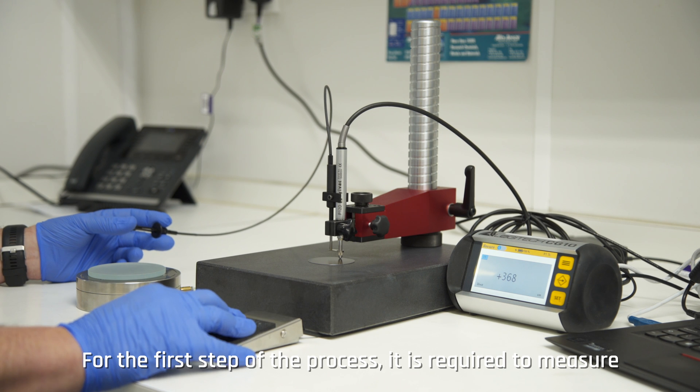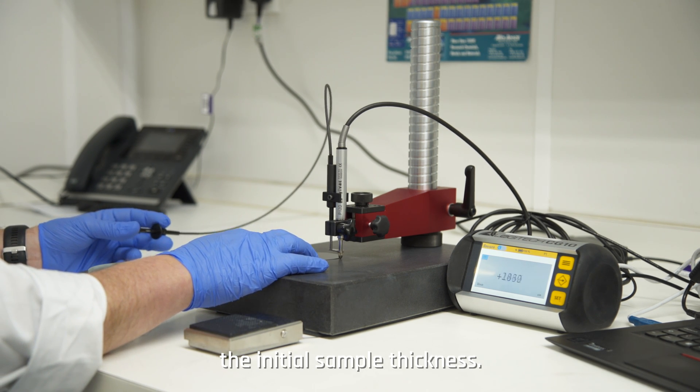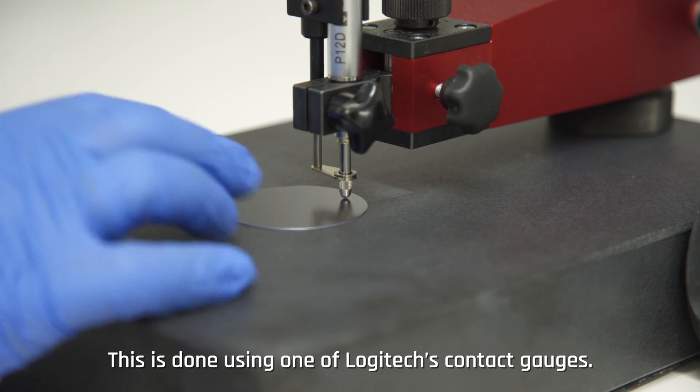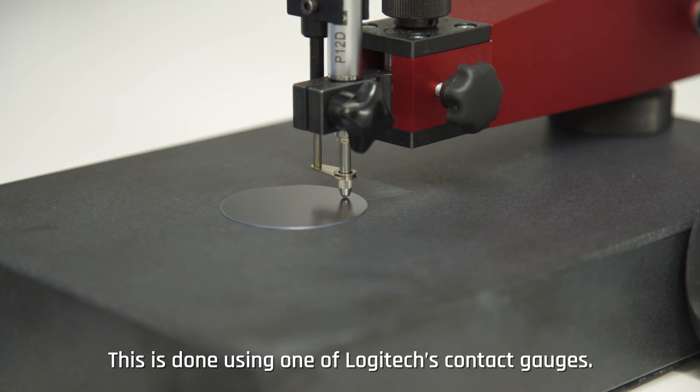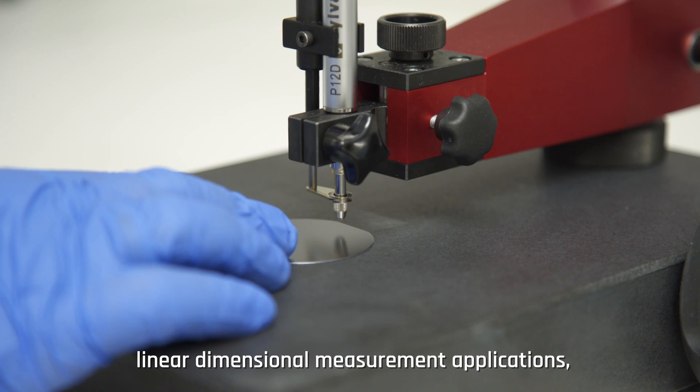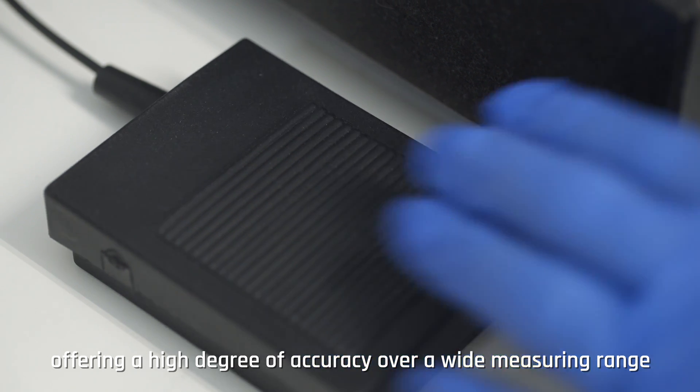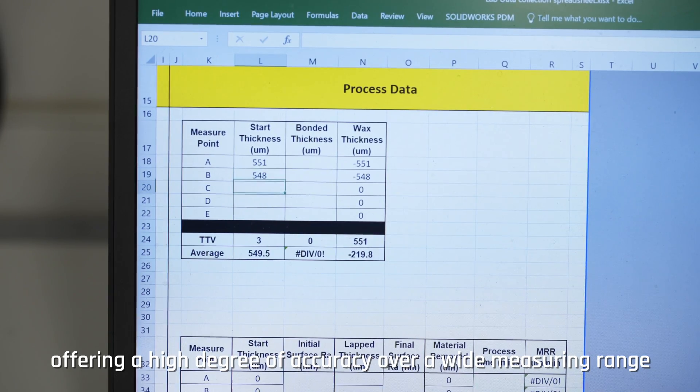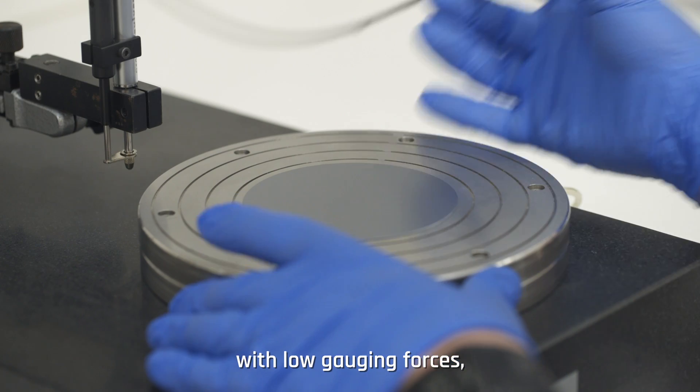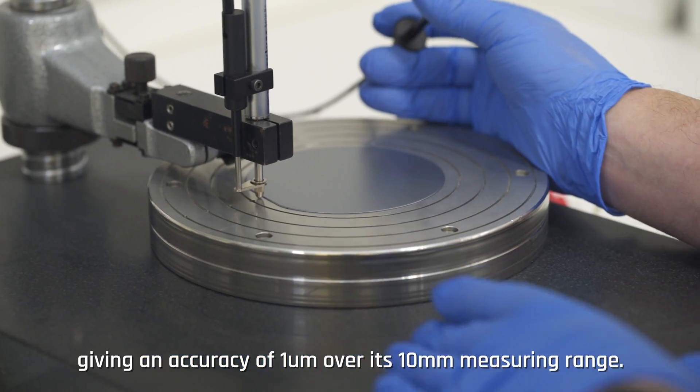For the first step of the process, it is required to measure the initial sample thickness. This is done using one of Logitech's contact gauges. The Logitech CG10 contact gauge is an instrument for linear dimensional measurement applications offering a high degree of accuracy over a wide measuring range with low gauging forces, giving an accuracy of one micrometer over its 10 millimeter measuring range.